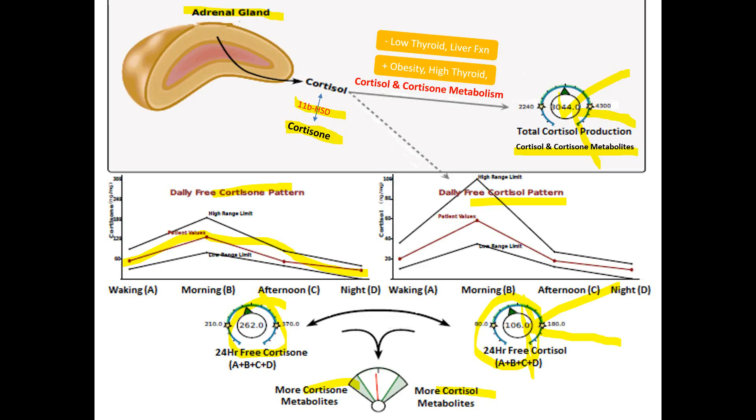So in a case like this, where everything's kind of high across the board, if you see a predominance of cortisone, that can make a lot of sense because the body's seen a lot of cortisol and trying to really just get rid of it and deactivate the cortisol as some sort of compensatory mechanism.